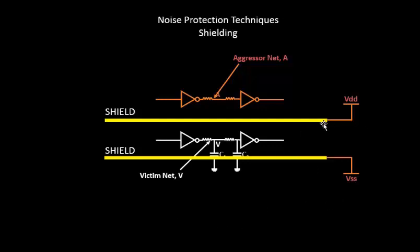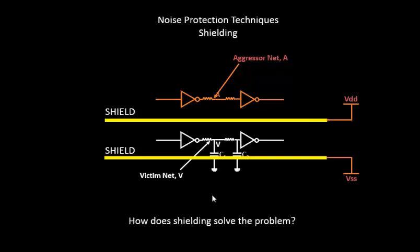How come shields protect? How come shields, when tied to logic 1 or logic 0, protect the victims? How does shielding basically solve the problem?